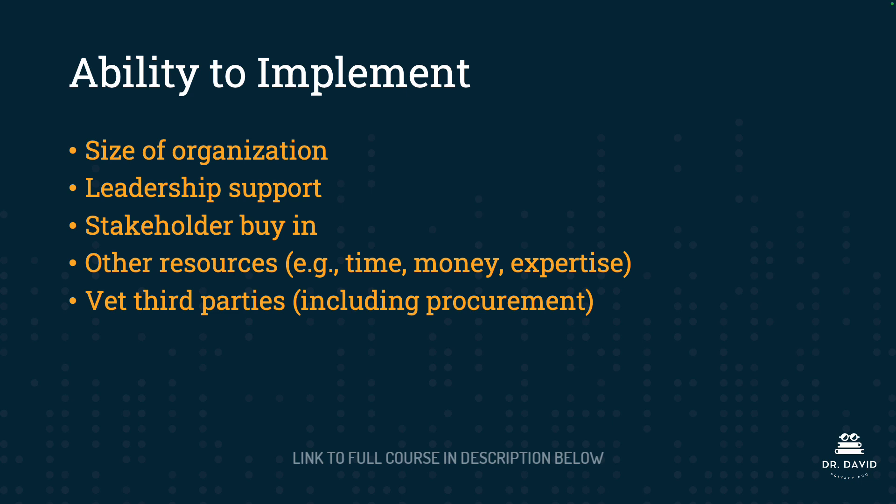You also need to consider your organization's ability to implement an AI governance body. You need to consider the size of the organization, the support you have from leadership, the buy-in you have from other stakeholders throughout your organization, and other resources such as time, money, and expertise. When necessary, make sure that you're vetting third parties, including procurement. This is particularly important if you are procuring a model from a vendor or integrating your system into third-party applications. It's important to consider the entire supply chain.